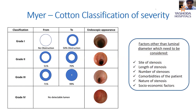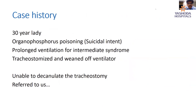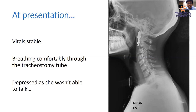This case was a 30-year-old lady who consumed an organophosphorus compound with suicidal intent. She developed intermediate syndrome and had to be on a ventilator for almost three to four weeks, during which she was tracheostomized. She was finally weaned, given physiotherapy, and sent home, but decannulation was attempted multiple times unsuccessfully. That was when she came to us. Vitals were stable, neurological function was recovering, though she still needed some support to stand and walk.